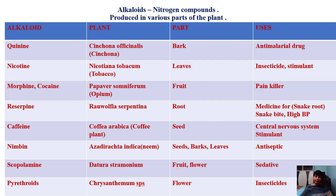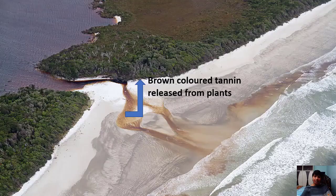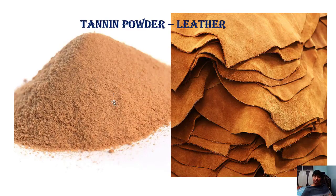Now moving on to another waste material produced in plants — tannin. Tannin is mainly produced by Acacia arabica and Cassia plants. Tannin is generally brownish in color. This processed tannin powder is used to polish leathers. These tannins are carbon compounds.